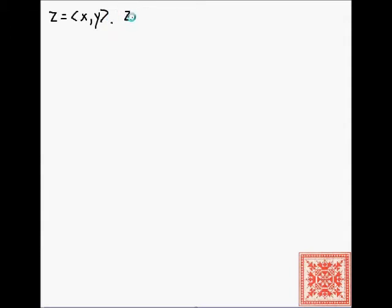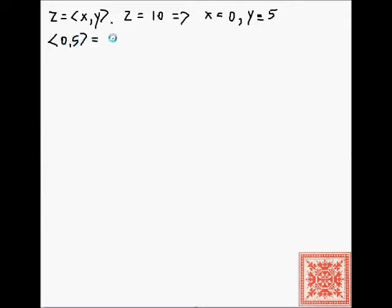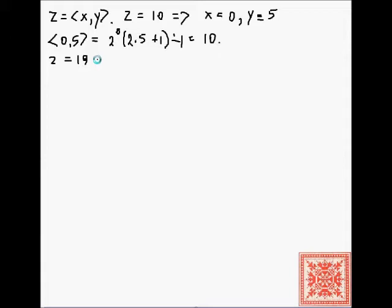Let's say that we have z, which is equal to the pair of x and y, where the pair is the pairing function. For example, if z is equal to 10, then x equals 0 and y equals 5. We can plug in the formula for the pairing function — taken from the third chapter of Davis, Weyuker, and Seagull's text — which is 2 to the x times (2y + 1) minus 1. Plugging in x=0 and y=5 gives 10.